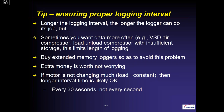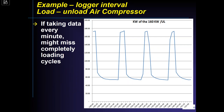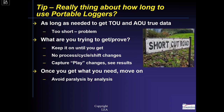If the load changes a lot, capturing cycling matters. This could be an air compressor, reciprocating chillers that stage on, or HVAC equipment. If you're taking data every minute, you would not see the loading cycles where the average goes up to well over 160 amps for a short period before the compressor unloads and runs at about 60 amps. If you took data every minute or every five minutes you would miss all these changes. You need to know that.